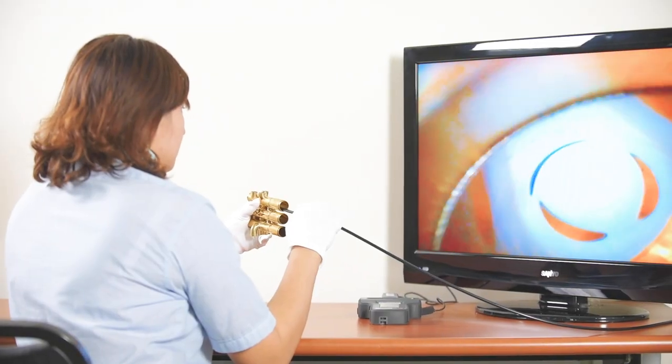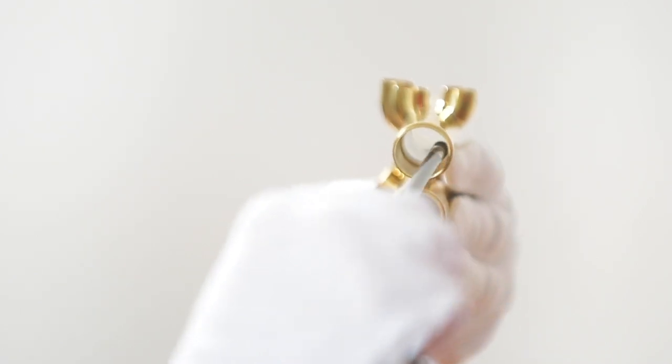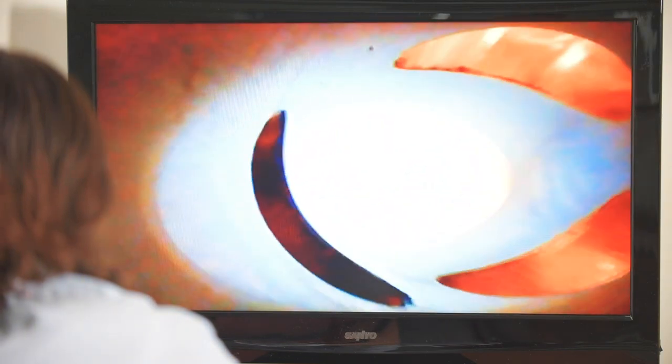The endoscope helps to check how smooth the inside of the casing is. Using the endoscope, Jupiter prevents erosion and the resulting malfunctions.